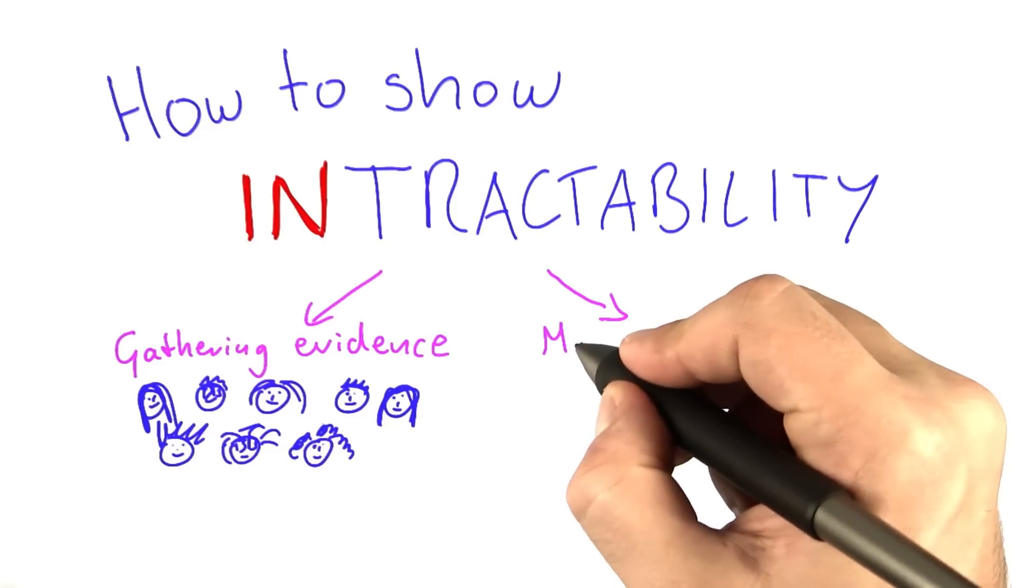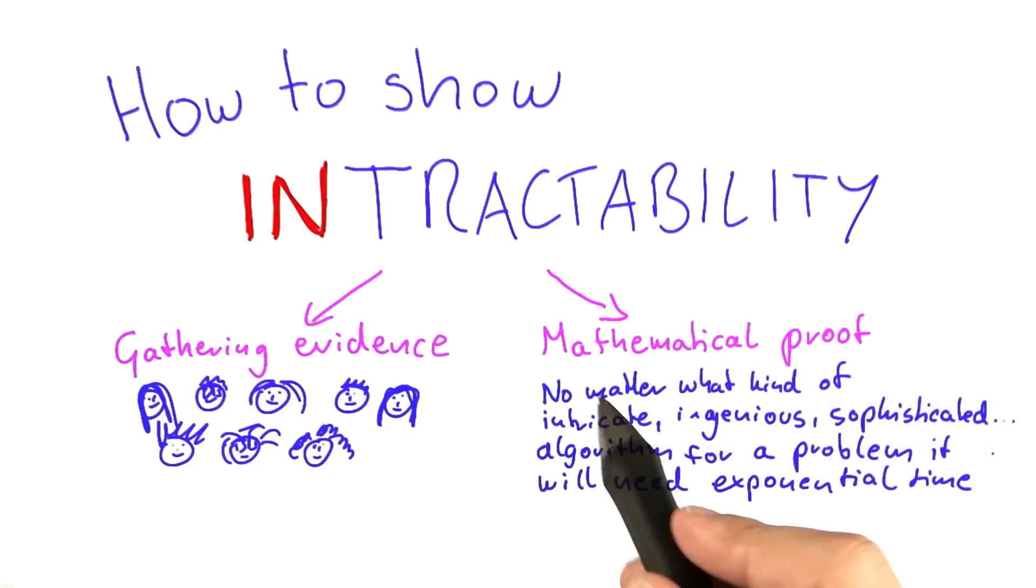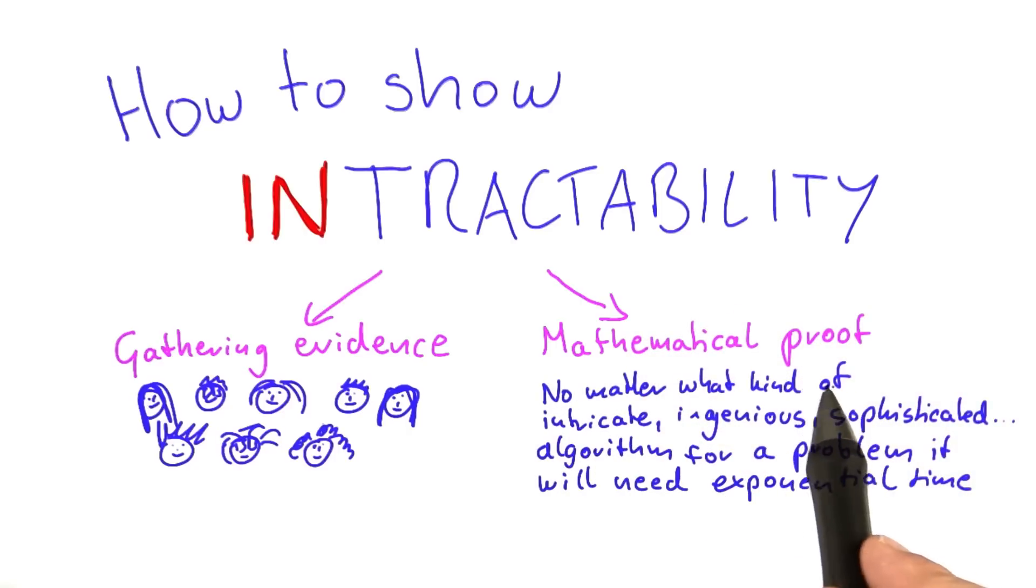Another way to go about this would be a mathematical proof. And what a mathematical proof would have to show is that no matter what kind of intricate, ingenious, sophisticated, complex algorithm we use for a problem, that algorithm will still need exponential time to solve the problem.